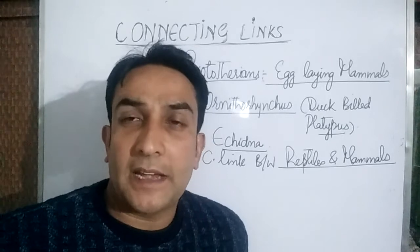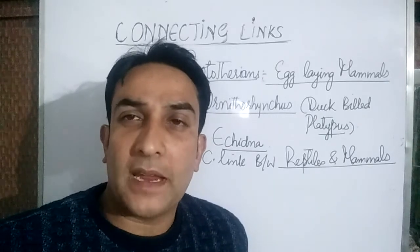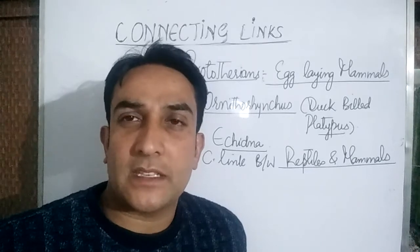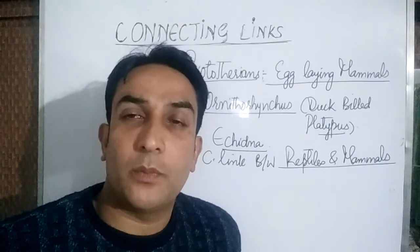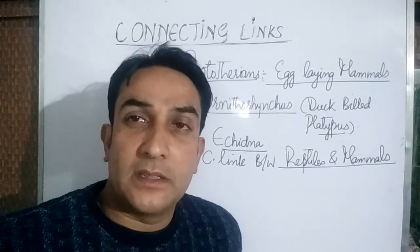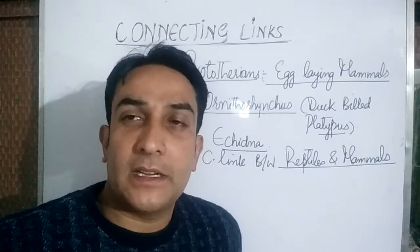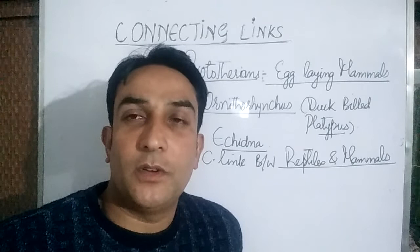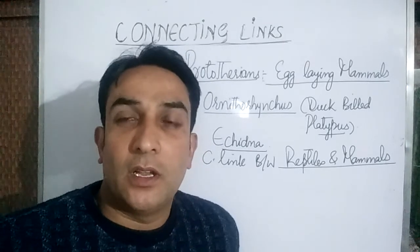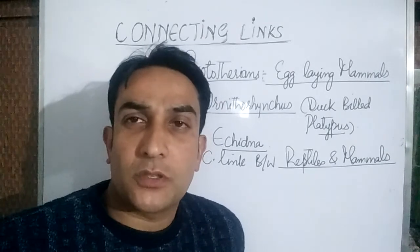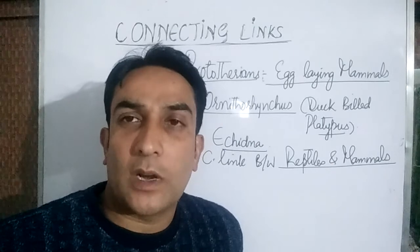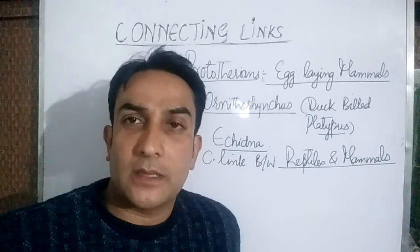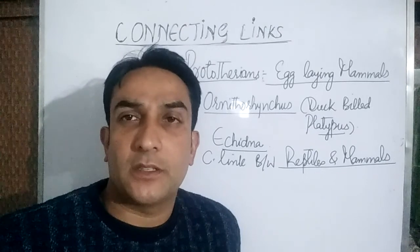So all these connecting links make the point that basically one group of animals has evolved from another group, and this is how connecting links provide us evidence that evolution has occurred. Hope that you understood what connecting links are and what is their importance in understanding evolution. For other lectures you can subscribe to your own channel, that's Mudabir's Biology Color.